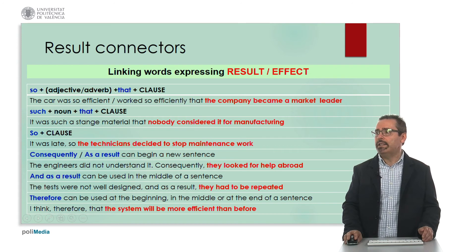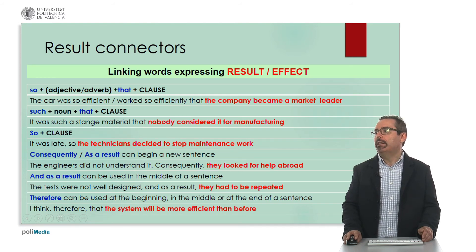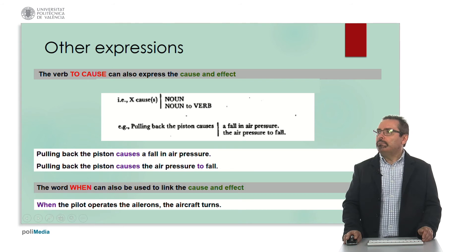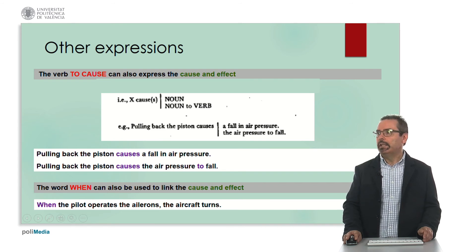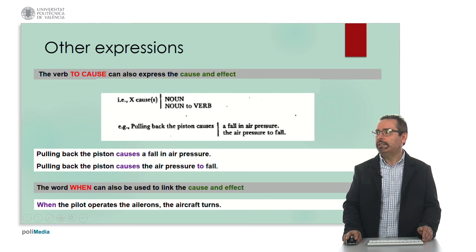We also have a typical connector therefore, that can be used at the beginning, in the middle, or at the end of the sentence — for example: I think, therefore, that the system will be more efficient than before. We can also use the verb to cause to express a cause and effect relationship, with or without a verb: pulling back the piston causes a fall in air pressure, or pulling back the piston causes the air pressure to fall. The word when can also be used to link a cause and effect — for example: when the pilot operates the ailerons, the aircraft turns.